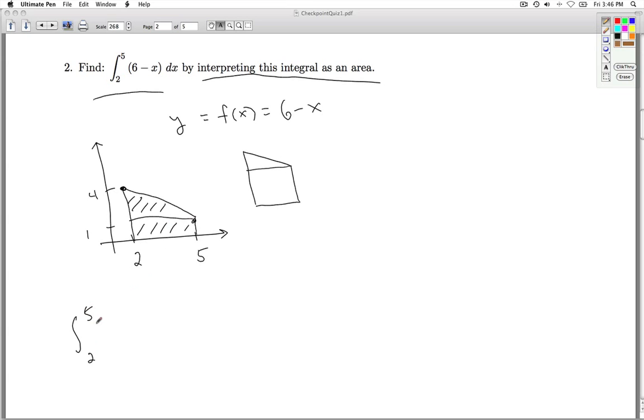So the integral from 2 to 5, 6 minus x dx, is the area of the triangle, which I'll call T, plus the area of the rectangle, which I'll call R.